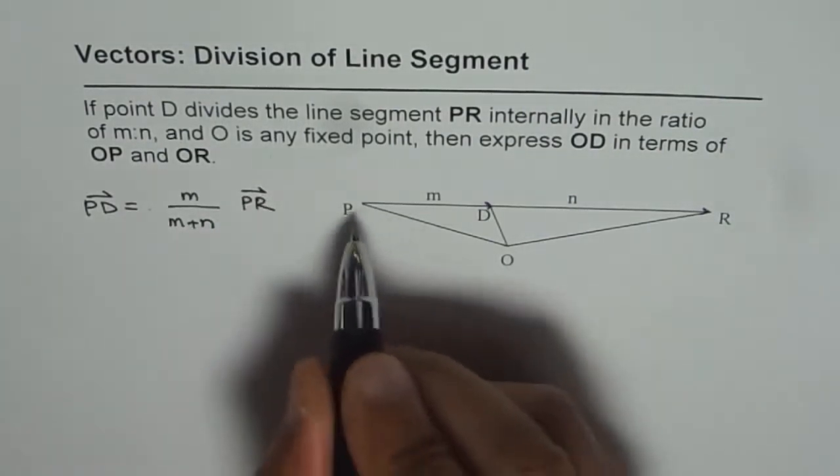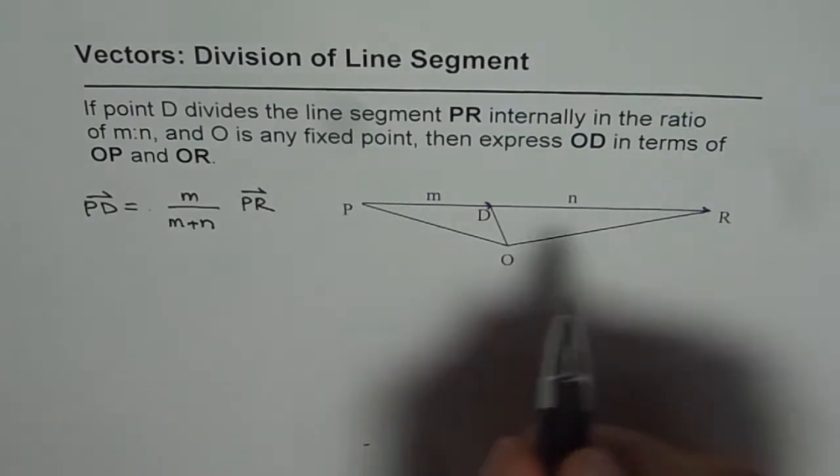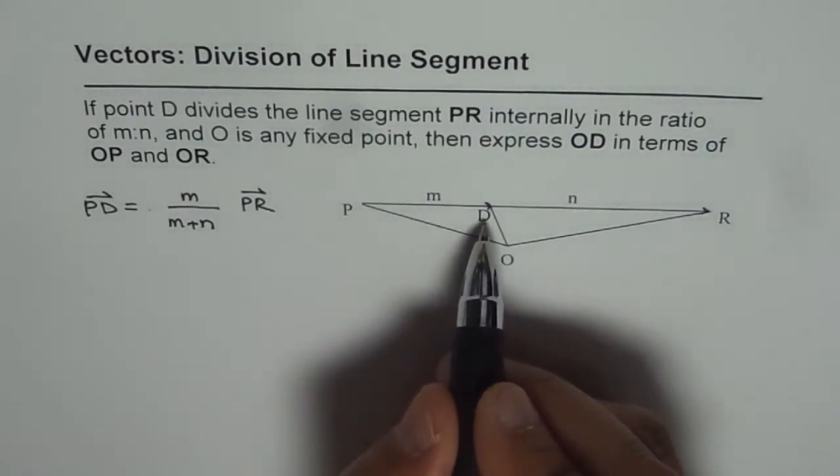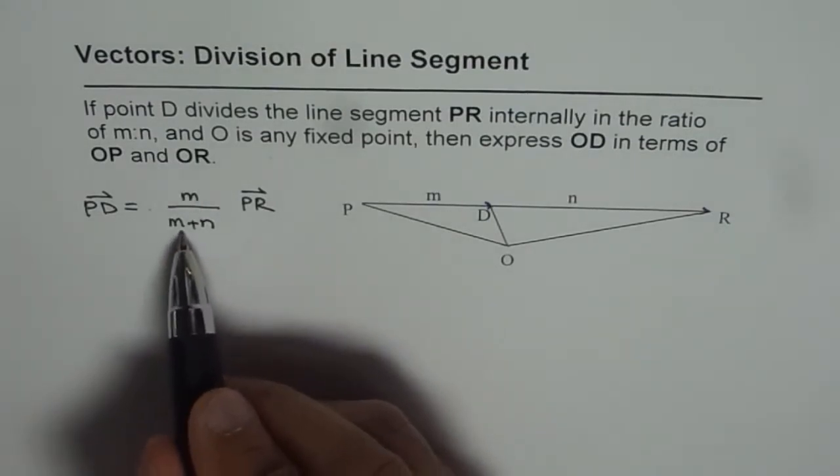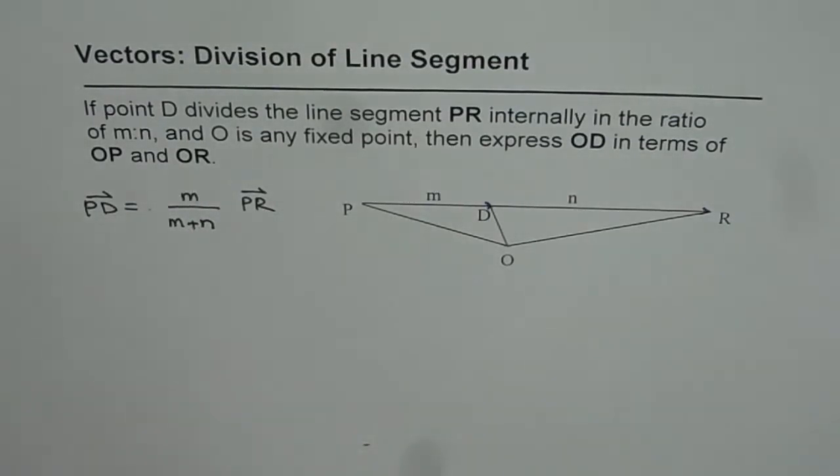These are collinear vectors and therefore PD is a scalar multiple of PR and the ratio is M over M plus N. That is how we get the relation between PD and PR.